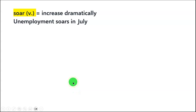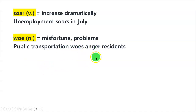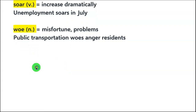'Soar' means to increase dramatically — 'Unemployment soars in July.' 'Woe' — be careful with the pronunciation — is a noun meaning misfortune or problems — 'Public transportation woes anger residents', meaning the problems of public transportation have made residents very angry. This is a very common term used in newspapers.